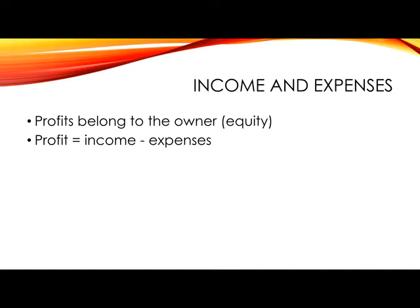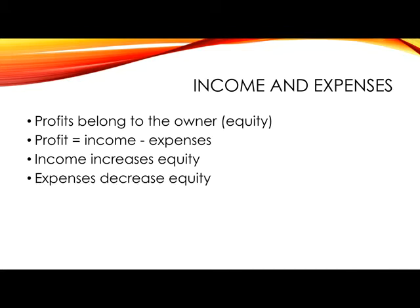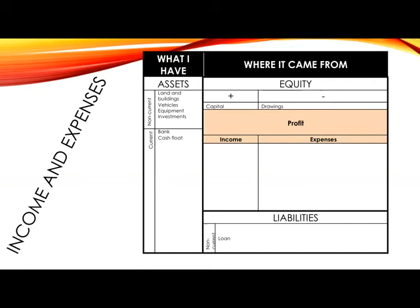Now because profit is part of equity, and profit is made up of income less expenses, this means that any income that is generated by the business will increase equity, and any expenses will decrease equity. If you have a look at the accounting equation, you can see here how we've put profit under the heading of equity. We've included income together with capital on the plus side, and expenses on the minus side.